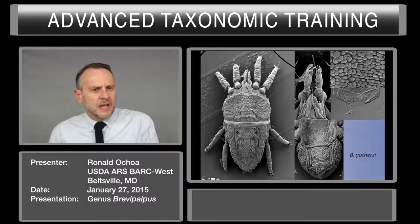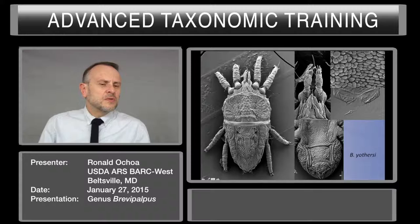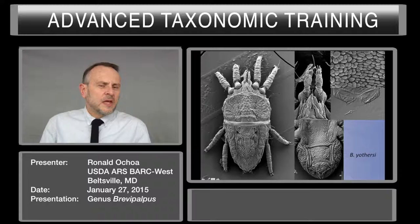Now, if we compare them with Brevipalpus on the other side, we'll notice that this mite in the prodorsum is more reticulated laterally. Also in the opisthosoma, you can see two strong groups in the central area. The palp seta is more linear, and the microplates are more simple — and sure, this spermathecae.